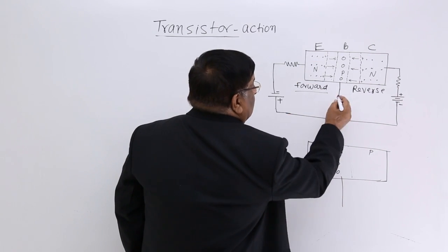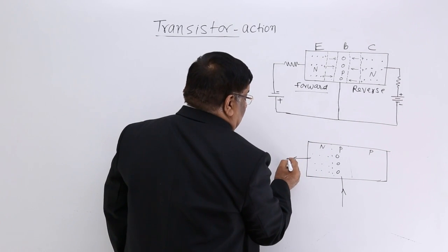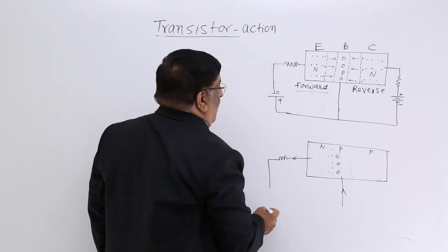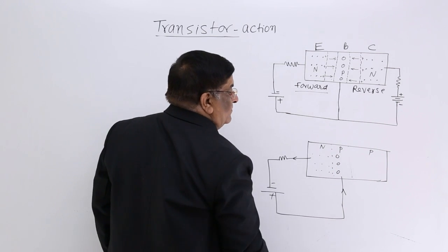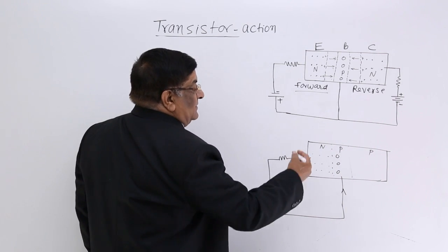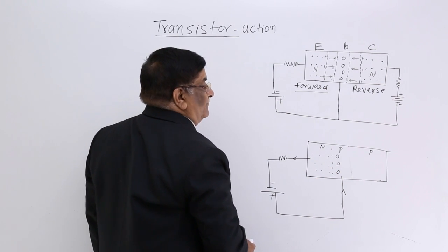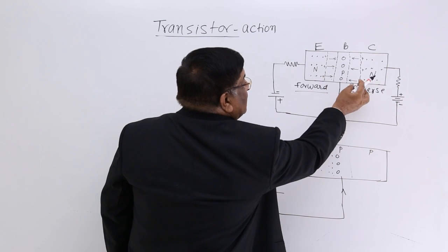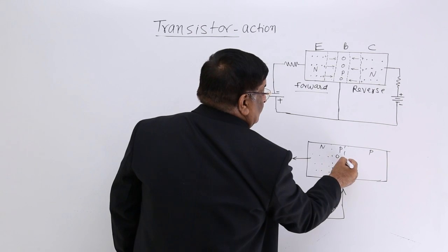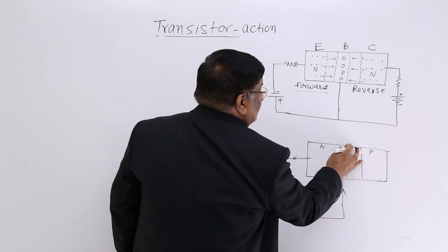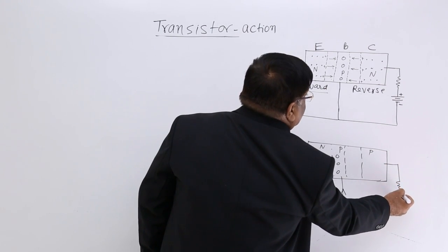The current starts flowing in this direction — from plus to minus. And this is the current flowing. Now, this other junction is reverse bias. In reverse bias, the depletion layer gets wider, and there is only a reverse current, which is a very small current.